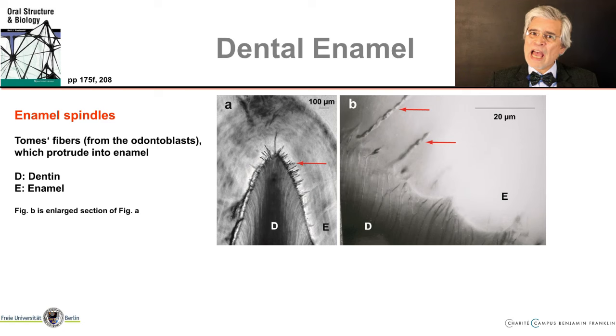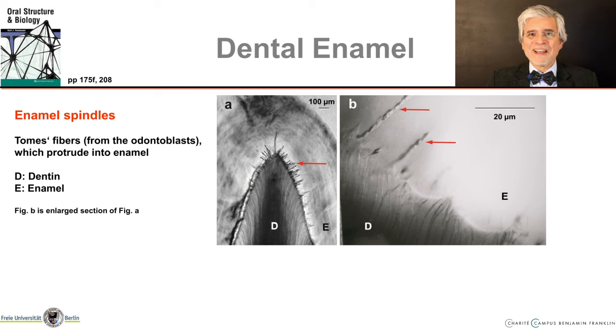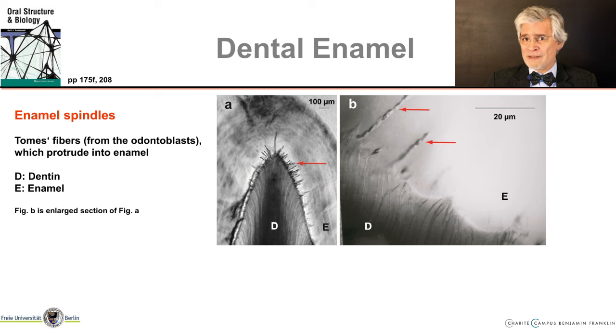At the dentino-enamel junction we find peculiar structures called enamel spindles. These terms come from the century before last. In reality, these are odontoblast processes that protrude for a certain distance into the enamel layer — D is dentine where they come from, and S is enamel. It is really not at all clear how they get into enamel, but I will give more details on this peculiar structure in the lecture about dentine.